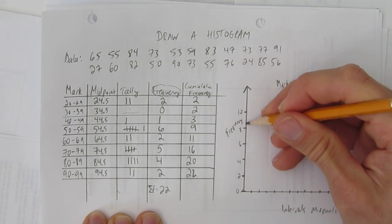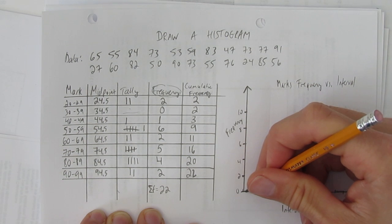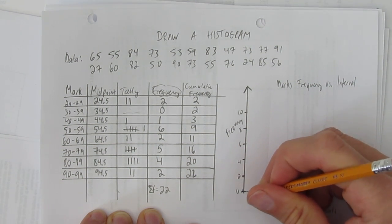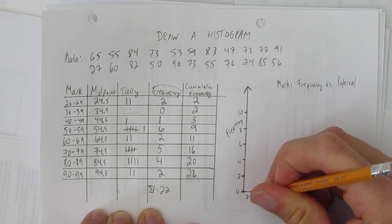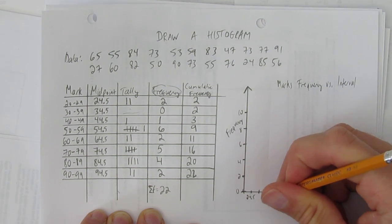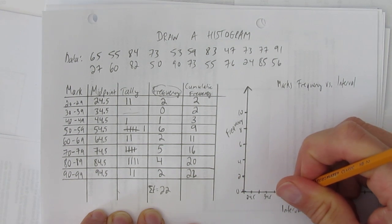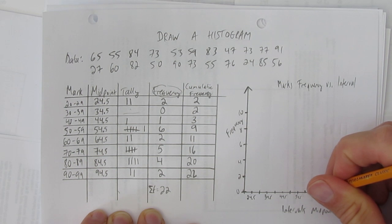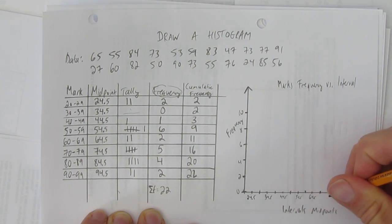Here, I went 0, 2, 4, 6, 8, 10. And for this one, my columns are going to go from here to here. So, I'm going to use the midpoint here, 24.5. And then the midpoint here of 34.5. And the midpoint here of 44.5. And so on. Each of my midpoints are going to be in the middle of their respective columns.